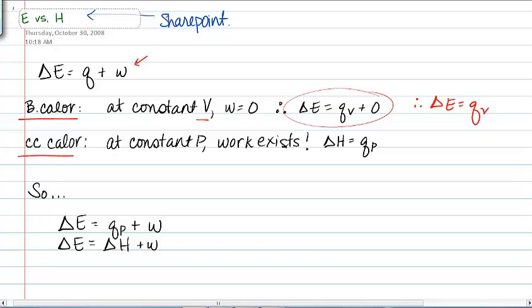We talked about a coffee cup calorimeter at constant pressure. We have work, and so ΔH = Q sub P. So these are some things that we already know. This is review.